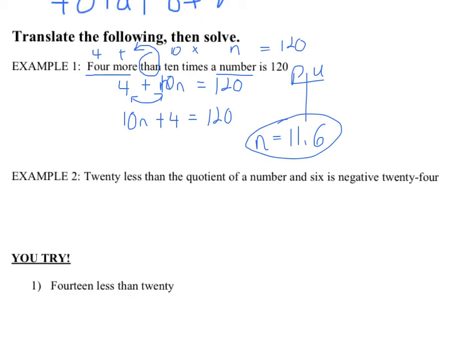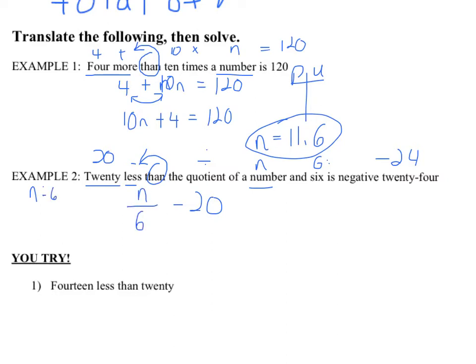Example two — go ahead and annotate this quickly by reading it carefully and writing above it. Hit pause and annotate. Here we go: '20 less than' — less means subtraction, and there's that word 'than,' so we'll have to switch it. 'The quotient' — quotient means division — 'of a number and 6.' The quotient of a number and 6 is equal to negative 24. I know I'll have to switch the order, so it's not 20 minus something. It'll be n over 6 minus 20 equals negative 24.